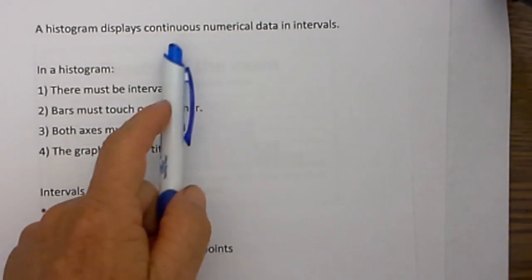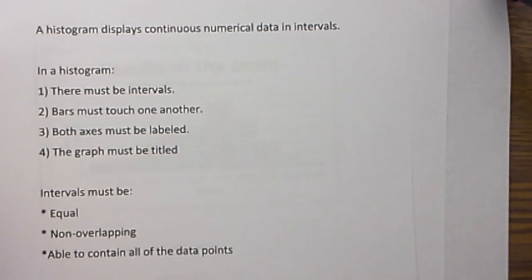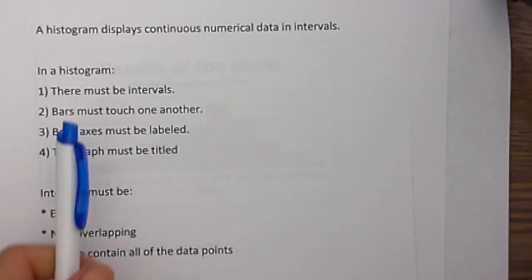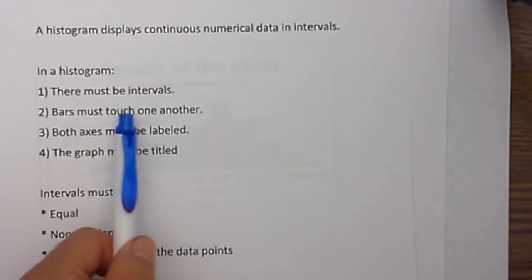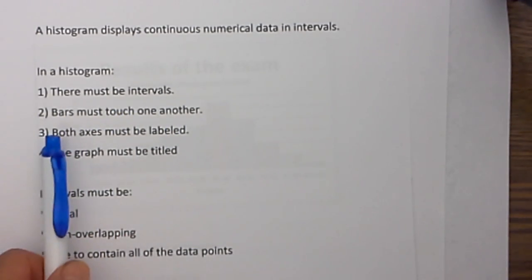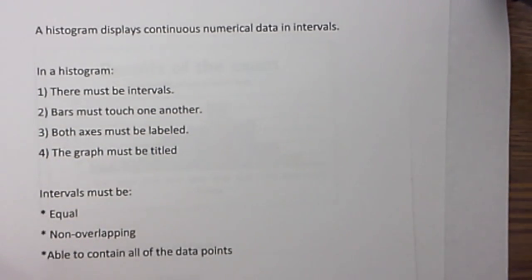A histogram displays continuous numerical data in intervals. In a histogram there must be intervals, the bars must touch one another, both axes need to be labeled, and the graph must be titled.